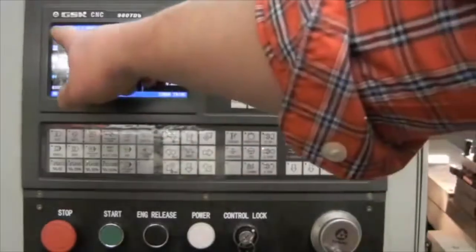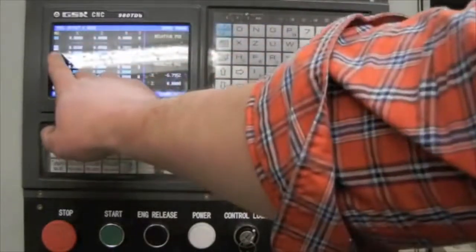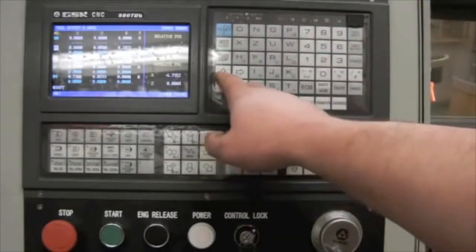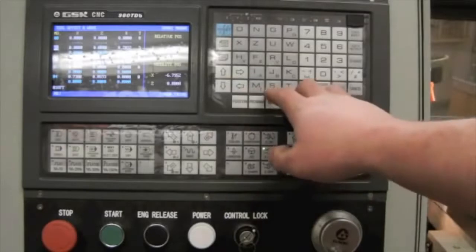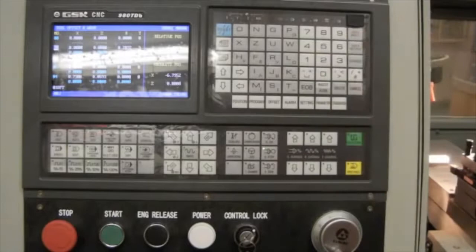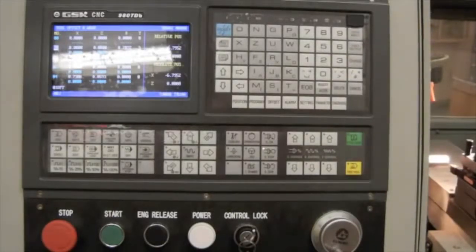I now press the offset key. This brings me to the tool offset and wear window. I make sure that tool 1 is selected. I can use my up and down arrows, and I'm going to enter Z, zero, data input. That sets my Z tool offset to zero for tool one.